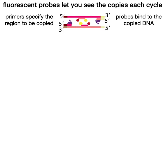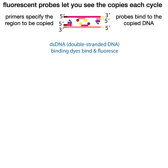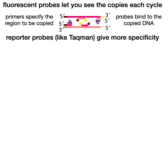You have primers that are specific to the region you want copied, and then you need a way to actually visualize the copies. Probes are going to bind to the copied DNA. What was traditionally done was using a double-stranded DNA (dsDNA) binding dye — these dyes bind non-specifically to any double-stranded DNA. Ideally you'll only have dsDNA if copies are getting made, so the amount of dsDNA is proportional to copy number. However, if there are non-specific products being made, you can get high background.